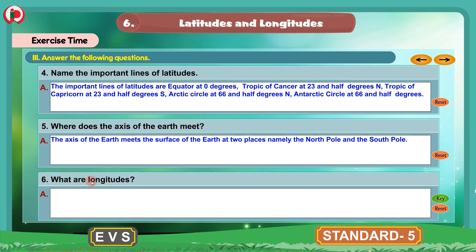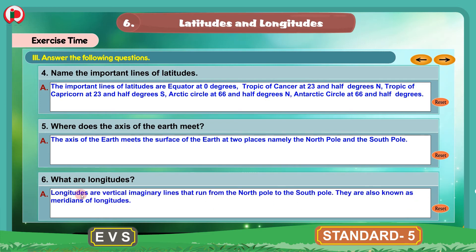Question 6: What are longitudes? Longitudes are vertical imaginary lines that run from the North Pole to the South Pole. They are also known as meridians of longitudes. You can write these answers in the workbook. Now we will move to the next question.